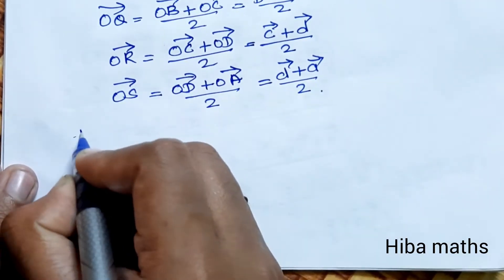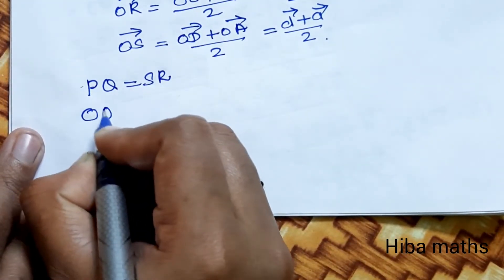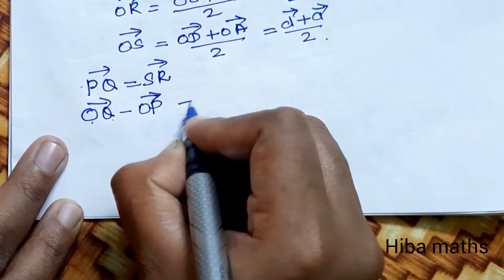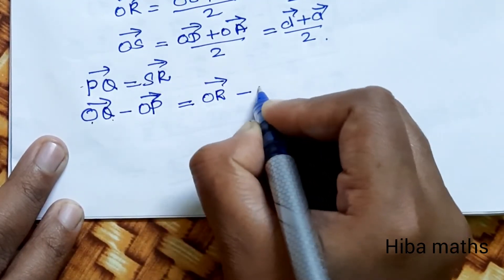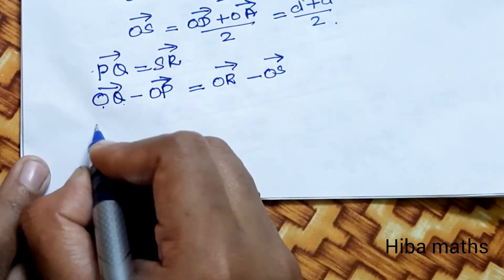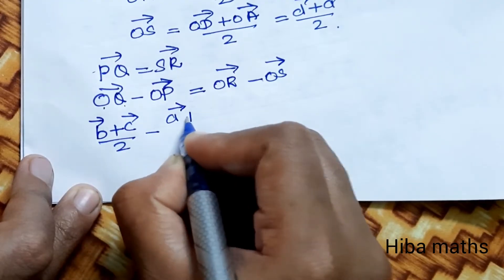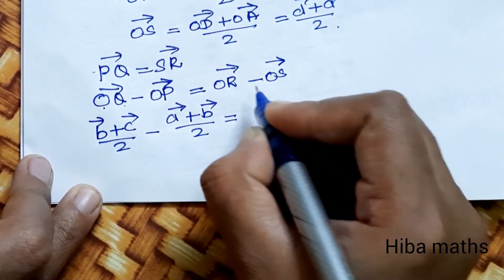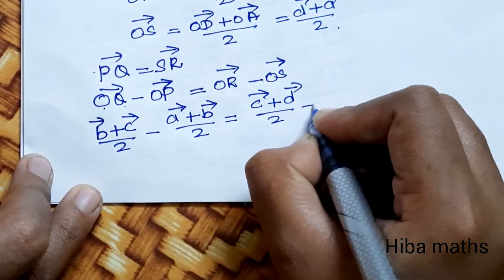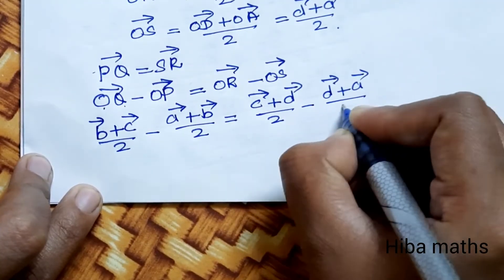Now the condition: opposite sides are equal. PQ is equal to SR. PQ vector = OQ vector minus OP vector, and this should be equal to OR vector minus OS vector. Substituting values: OQ = (b vector + c vector) / 2, minus OP = (a vector + b vector) / 2, equal to OR = (c vector + d vector) / 2, minus OS = (d vector + a vector) / 2.